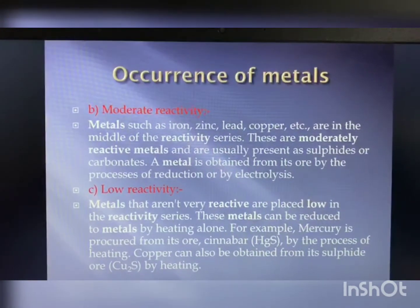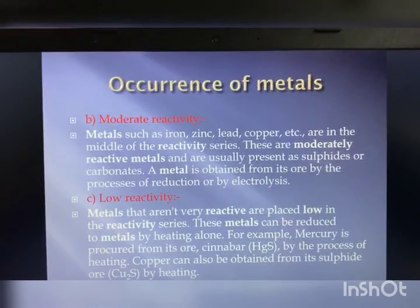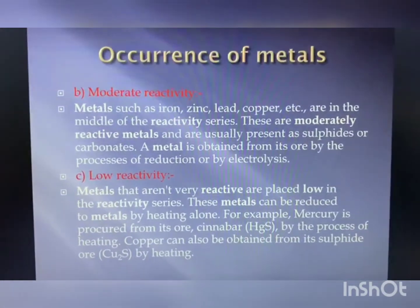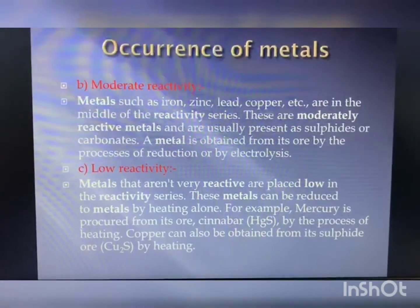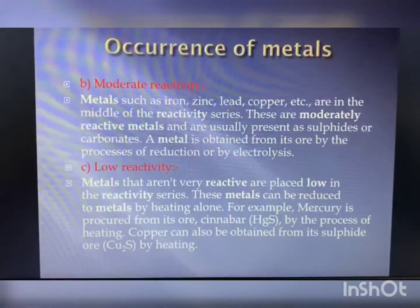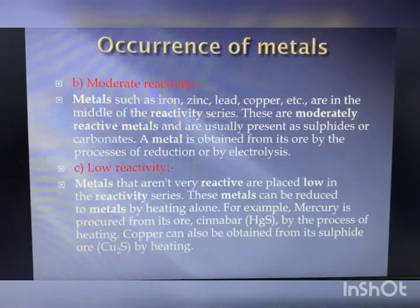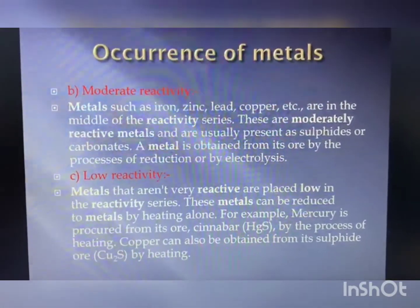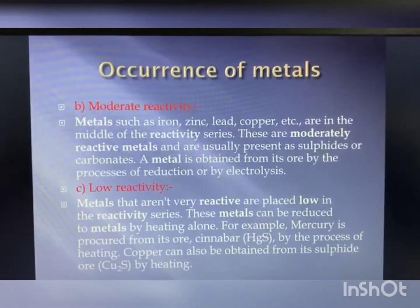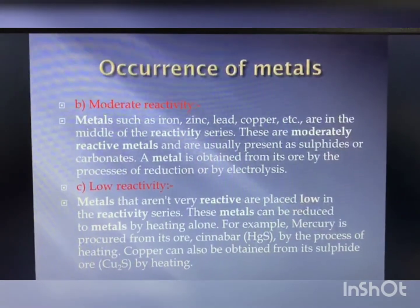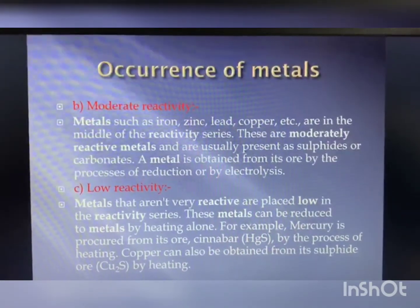Sulfide ores are converted into oxides by heating strongly in the presence of excess air; this process is known as roasting. Carbonate ores are changed into oxides by heating strongly in limited air; this process is known as calcination.